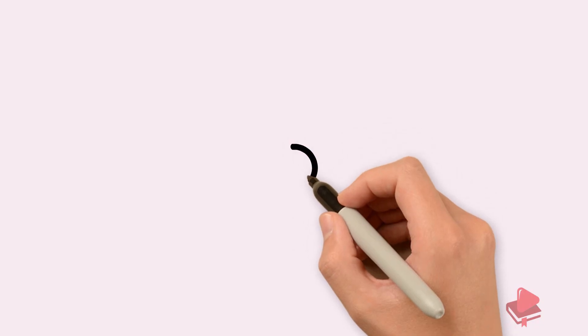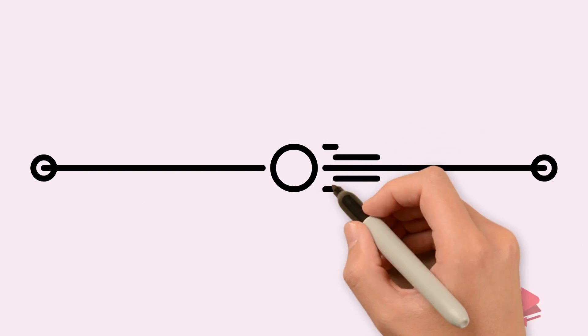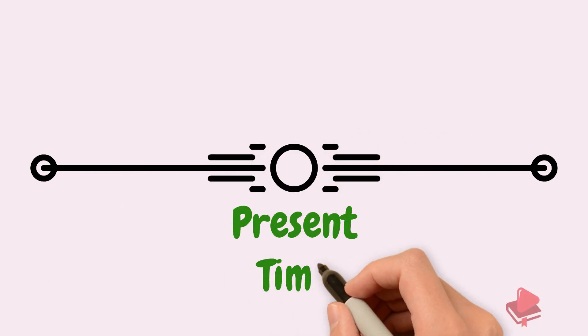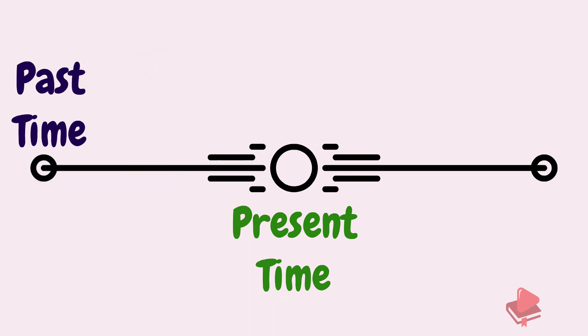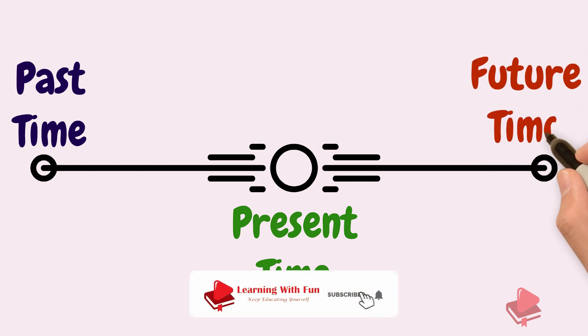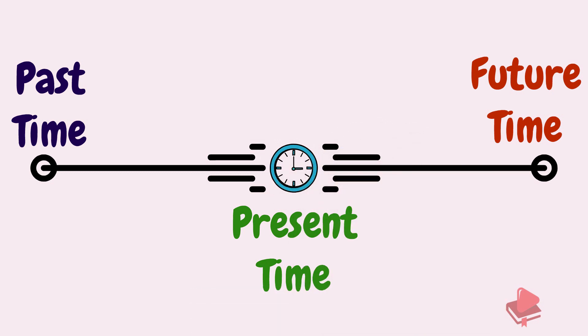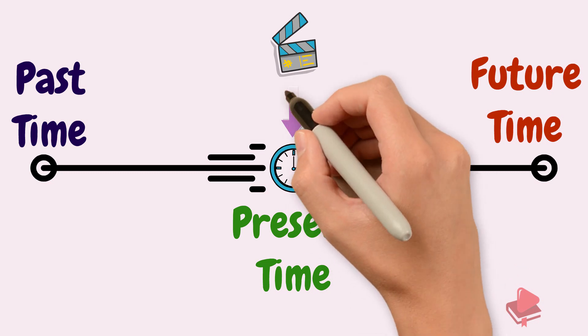From a general view of tenses, this module will go on to discuss each tense in detail with examples. And here, the circle represents the present time. The line left to the circle is the past time and the line to the right is the future time. Do remember this timeline properly as we are going to use this timeline for understanding when an action took place with respect to the time.